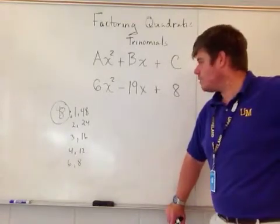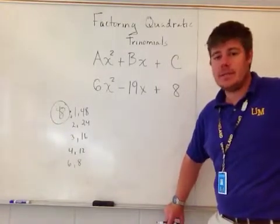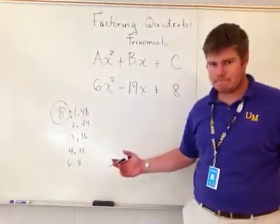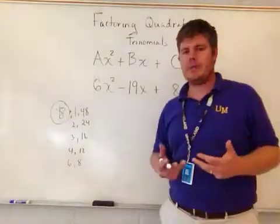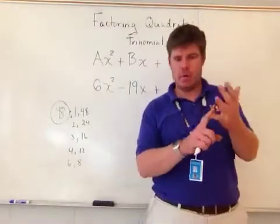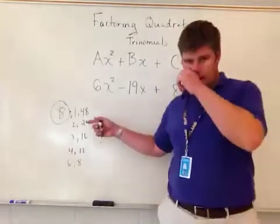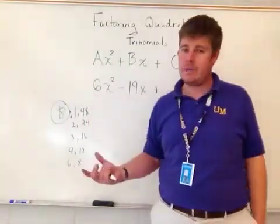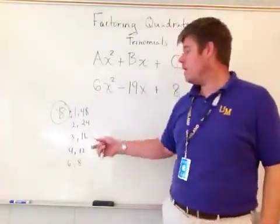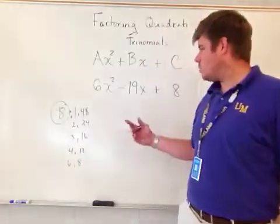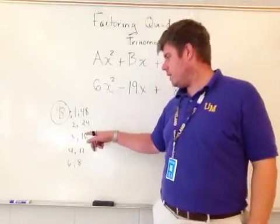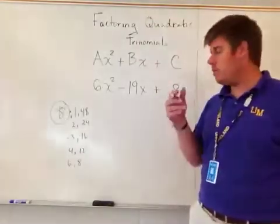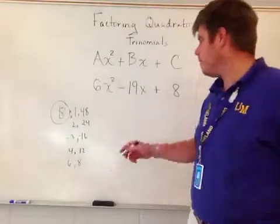Now I need to look at the factors of 48 and find which ones can make negative 19. To make positive 48, both factors must be negative. Two positives can't make negative 19 when added together, so both must be negative. 3 and 16 jumps out - if I made them both negative and added them together, it would make negative 19.